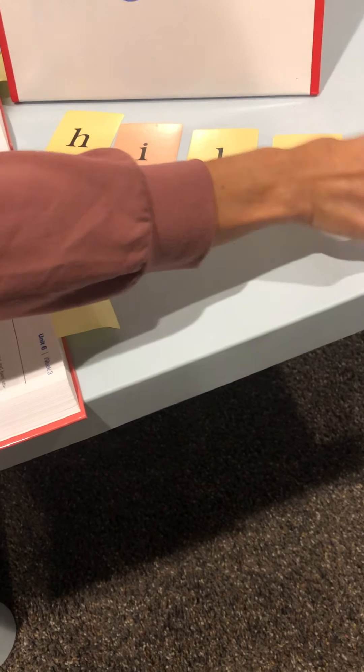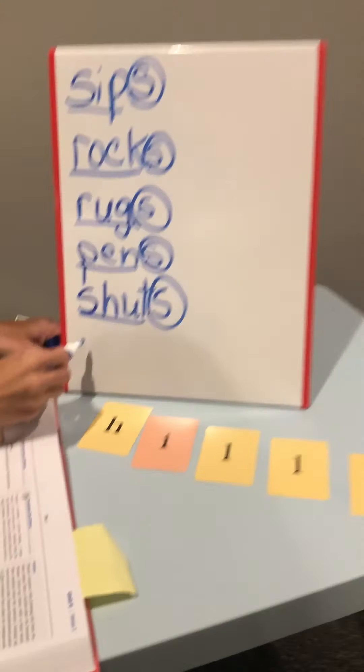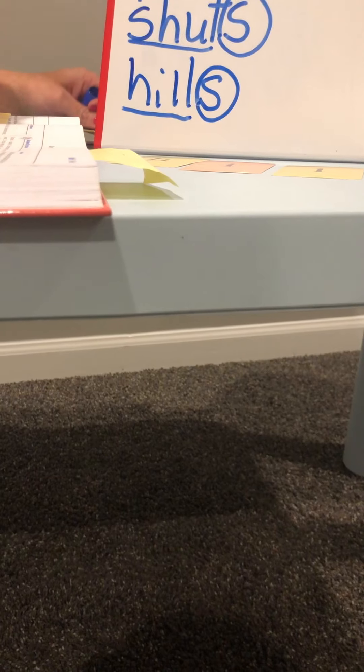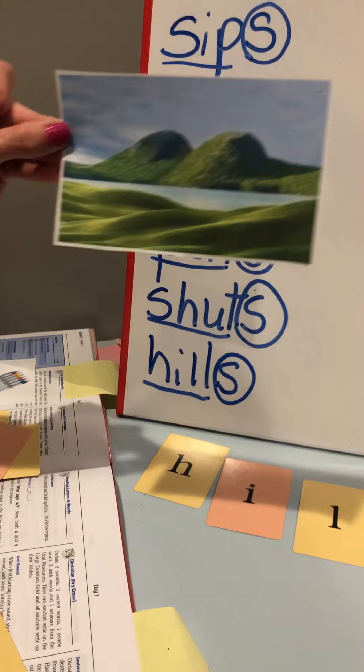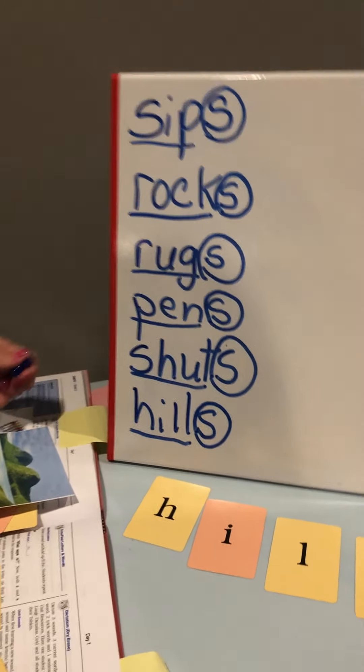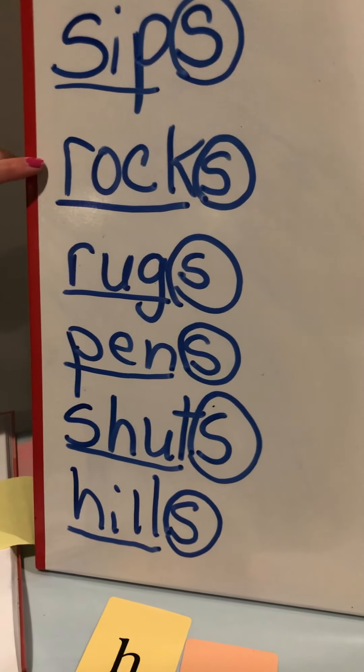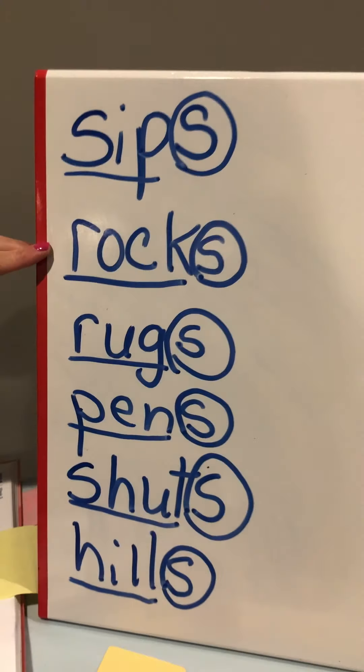And one more. Tap it out first: hills. Let's write it up here. We're gonna underline the base word hill, circle the suffix, and this is more than one hill. Here's my picture — hills.